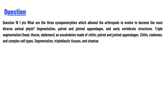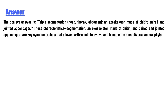The answer options are: segmentation, paired and jointed appendages; triple segmentation — head, thorax, abdomen — and exoskeleton made of chitin, paired and jointed appendages; chitin, coeloms, and complex cell types; or segmentation, triploblastic tissues, and chitin. Now, the correct answer is...